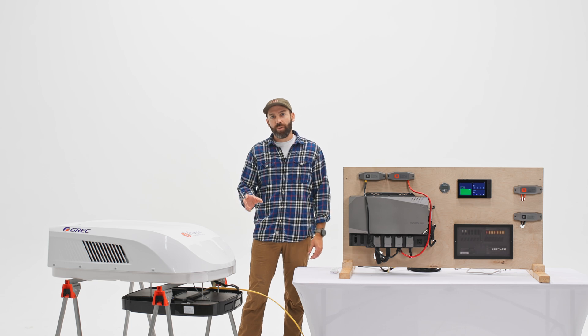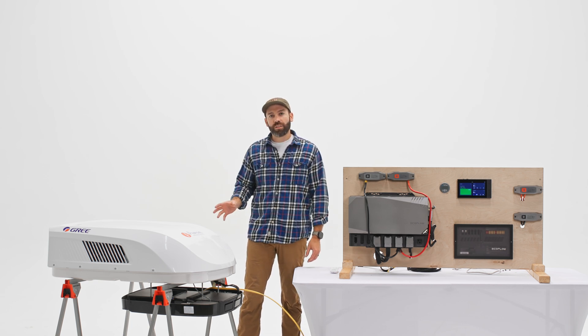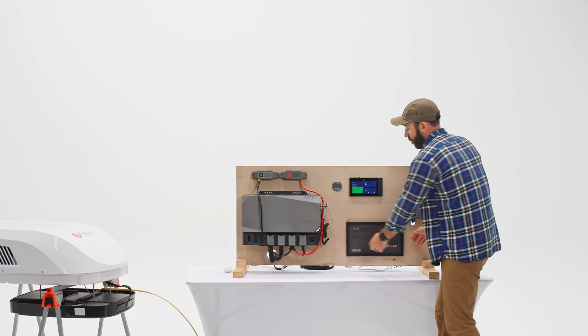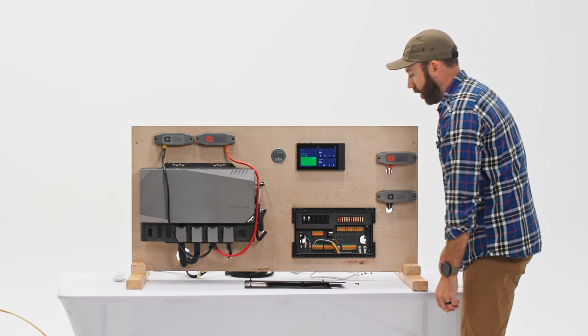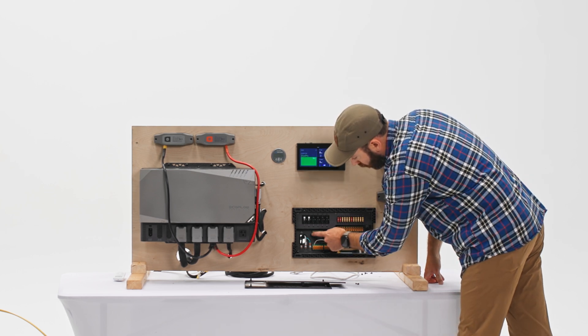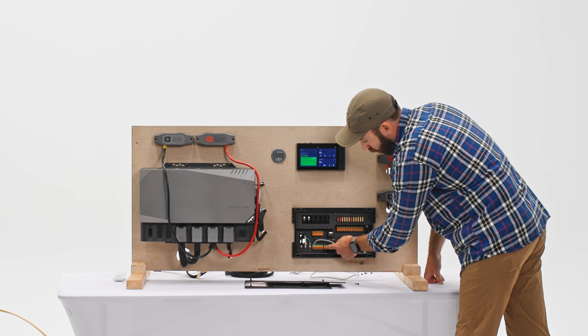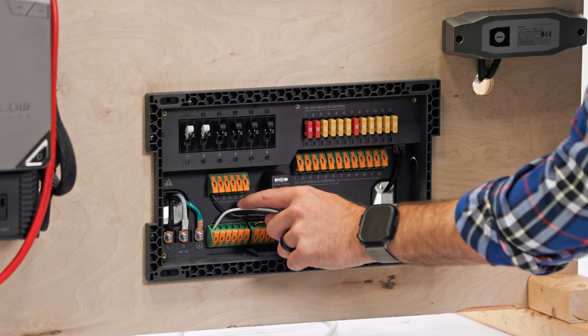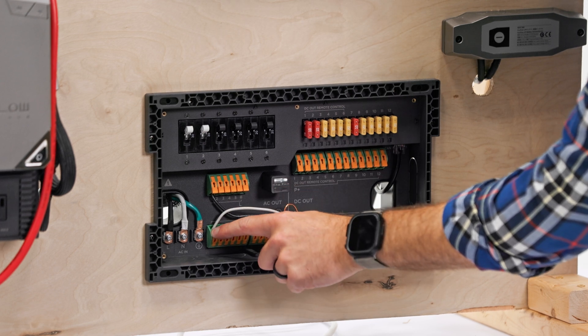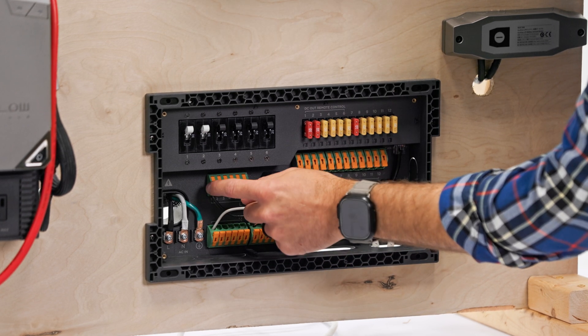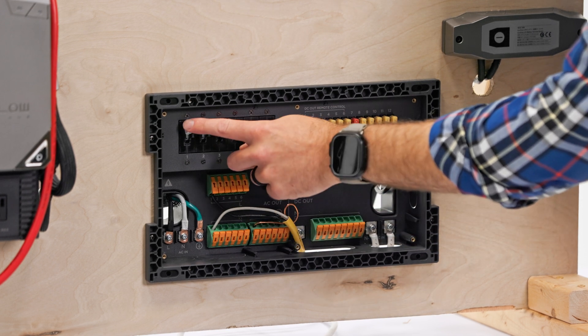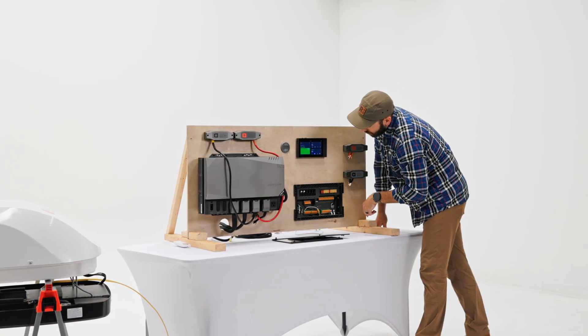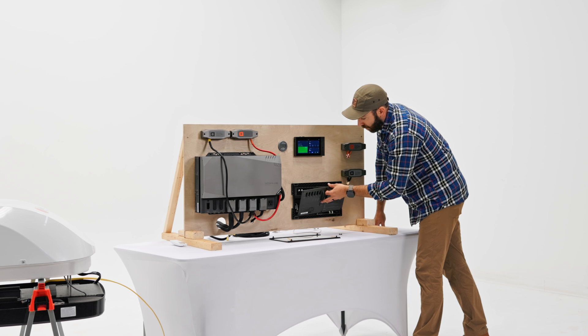All right, so we've got our unit wired in here into our distribution panel. I'm going to quickly pop off the cover. So we've got our 12-2 Romex coming in here. We've got our load on the top, our neutral, and then our ground bar. So our ground is coming into the ground, we've got our neutral, our white wire here into position one, and then our load black wire coming in also into position one. So that's going to be this first breaker here, this is a 30 amp breaker, and then our AC output is on.